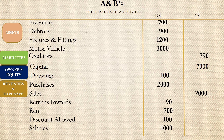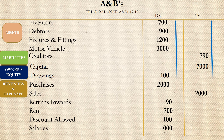The final step is to add the amounts in the debit and credit columns. The total we get for both columns is 9,790. There we have it — the question has been solved.